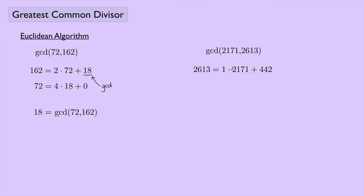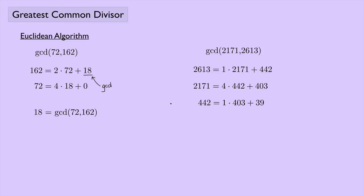Now we're going to take 2,171 and see how many times 442 goes into that. It looks like it goes in four times with a remainder of 403. We keep going — we take that 442 and see how many times 403 goes into it, and that goes in once with a remainder of 39. We still don't have a remainder of 0, so now we take the 403 and see how many times 39 goes into it. It goes in 10 times with a remainder of 13.